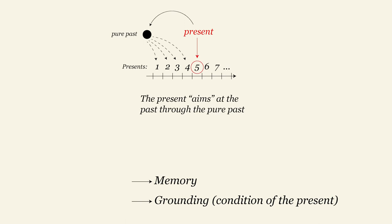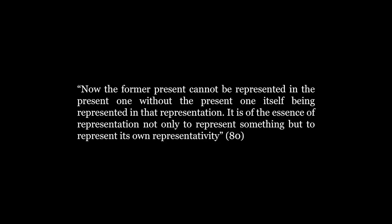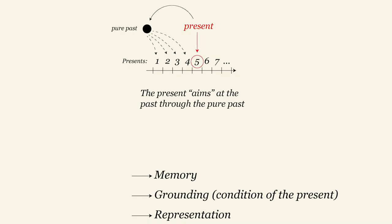In this second synthesis, the ancient present is reproduced or represented in the current present, which introduces something like a step between the thing and the image of the thing. In other words, the present is not an immediate presentation anymore, it becomes a representation. Now the former present cannot be represented in the present one without the present one itself being represented in that representation. It is of the essence of representation, not only to represent something, but to represent its own representativity. It's pretty clear that the representation of the past occurs in the mind. So it is an active synthesis. But grounding is passive, it occurs automatically.